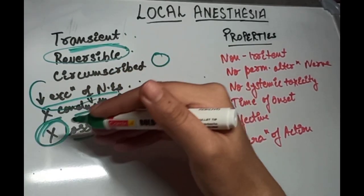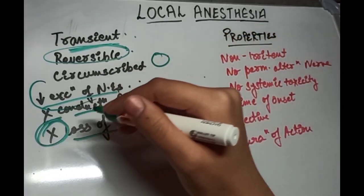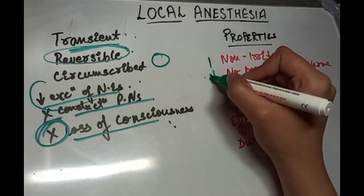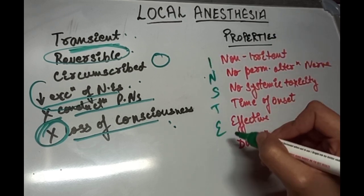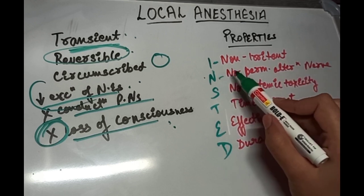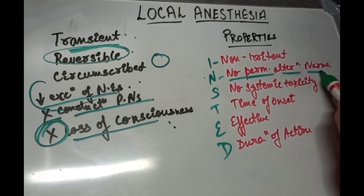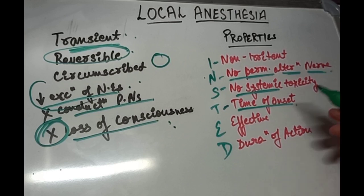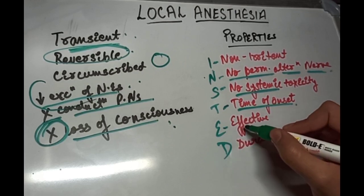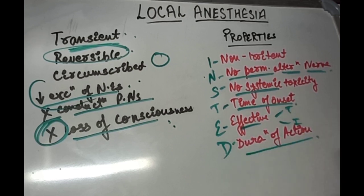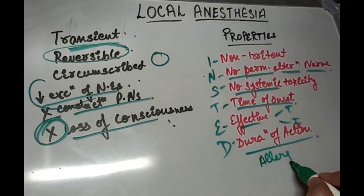Coming to the properties of an ideal LA agent — to remember this, remember the mnemonic INSTEAD. It should be non-irritant and produce no local reaction to the tissues. There should be no permanent alteration of the nerve structure. There should be no systemic toxicity. It should have a rapid onset of action. It should be effective both topically as well as when injected, and the duration of action should be sufficient.